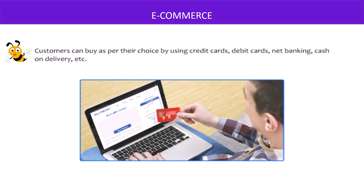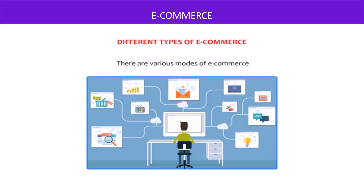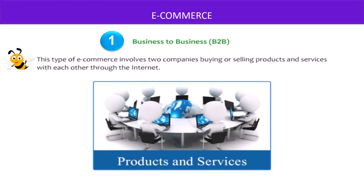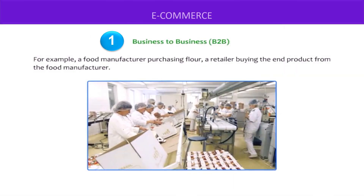Customers can pay by using credit cards, debit cards, net banking, or cash on delivery. There are various modes of e-commerce. The first is Business to Business, which is B2B. This type of e-commerce involves two companies buying or selling products and services with each other through the internet. For example, a food manufacturer purchasing flour from a flour manufacturer, or a retailer buying the finished product from the food manufacturer.